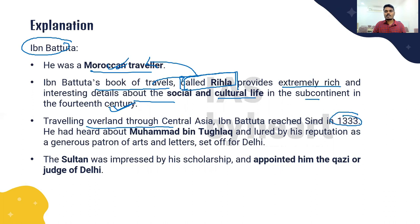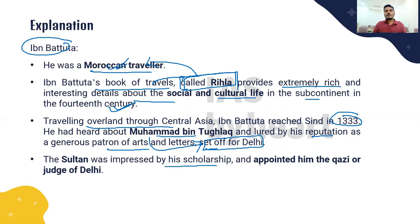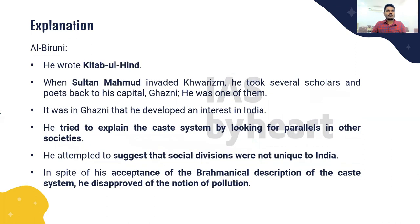Ibn Battuta was a Moroccan traveler. His book of travels is called the 'Rihla,' which provides extremely rich and interesting details about social and cultural life in the subcontinent in the 14th century. Traveling overland through Central Asia, Ibn Battuta reached Sindh in 1333. At that time he heard about Muhammad bin Tughlaq and his reputation as a generous patron of arts and letters, and set out to meet him. The Sultan was impressed by his scholarship and appointed him the Qazi of Delhi.